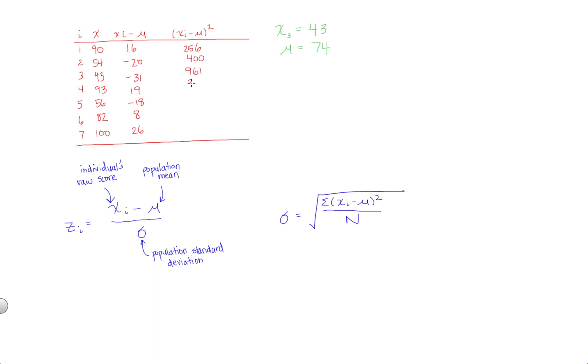19 squared equals 361, negative 18 squared equals 324, 8 squared is 64, and 26 squared is 676. Now remember, we still have this sigma, so the next step is to add up these values.